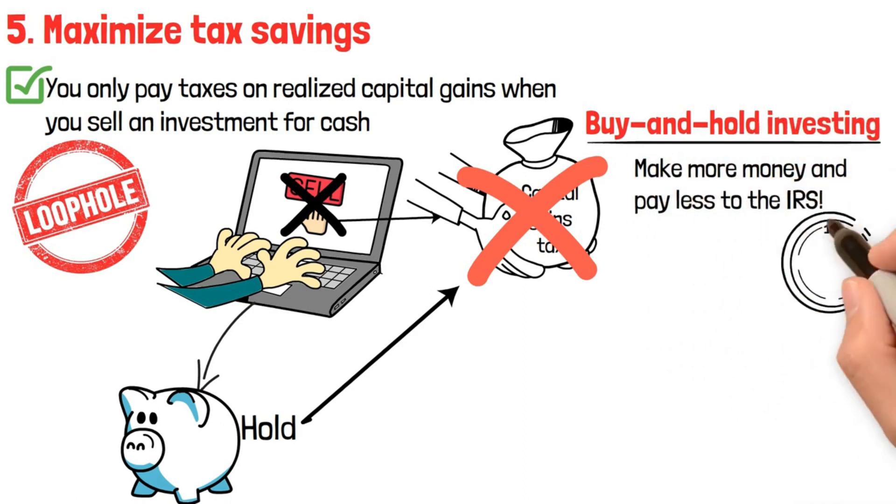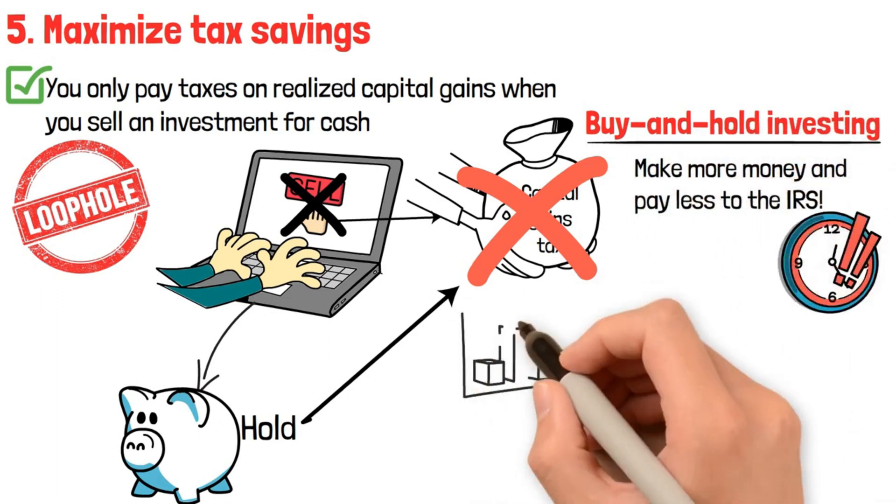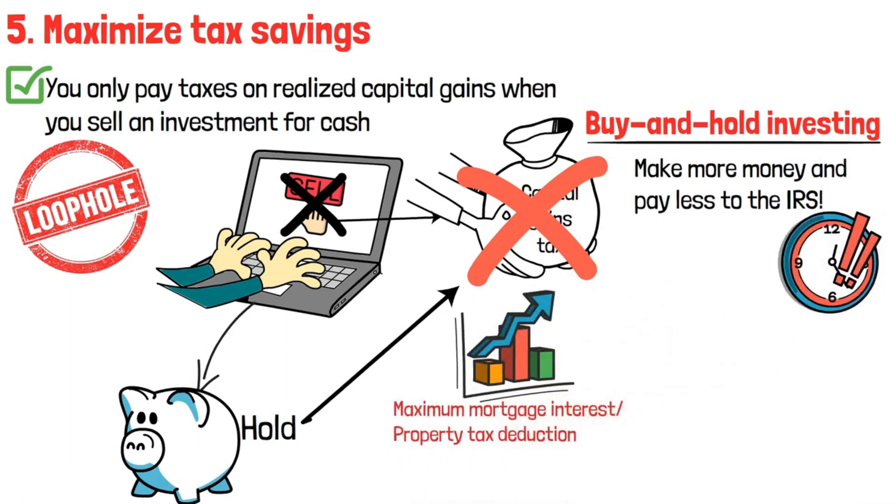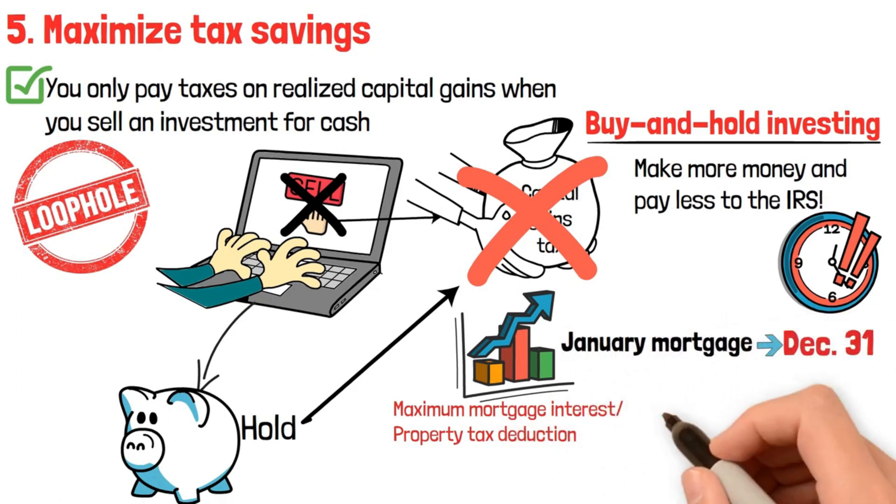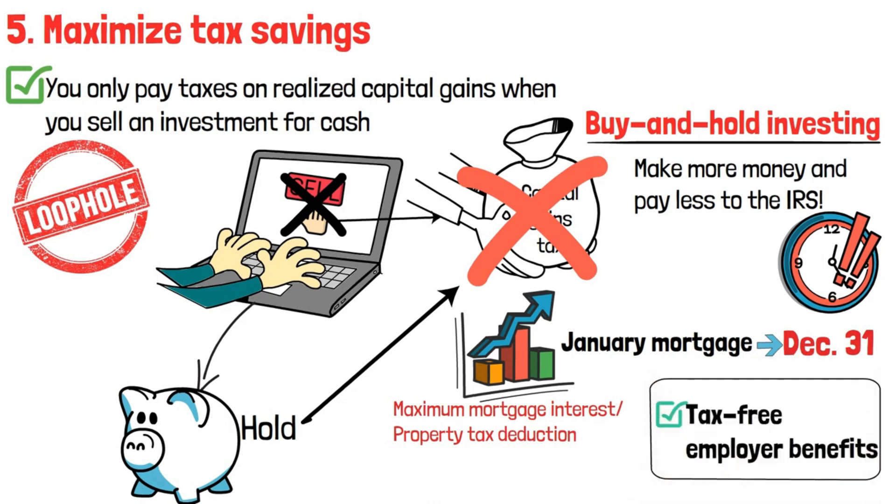Try paying taxes or mortgage early. If you need to hit the maximum mortgage interest or property tax deduction, prepay your January mortgage or local taxes by December 31. Same goes for student loans. Lastly, rely primarily on tax-free employer benefits. You can thank me later.